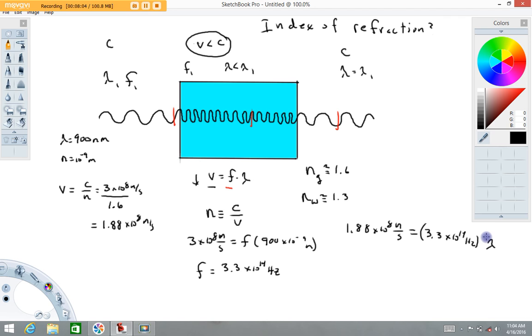So, now it's just a matter of solving for our new wavelength. Give me a moment. What I get is 0.57 times 10 to the negative 6 meters.